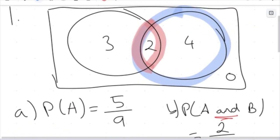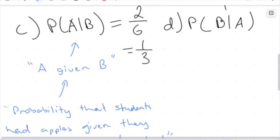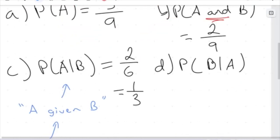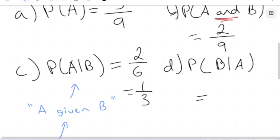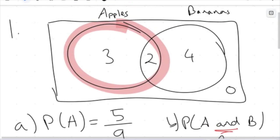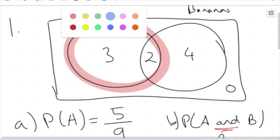Now let's reset. We have a new condition here: we're looking for the probability that students had bananas given they had apples — the probability of B given A. Given that we're just looking at the students that brought apples, how many students is this? Well, that's 5. So 5 is my new sample space, my denominator.